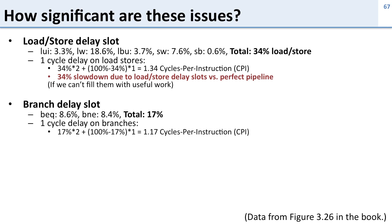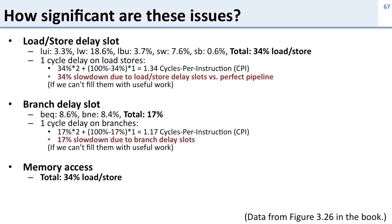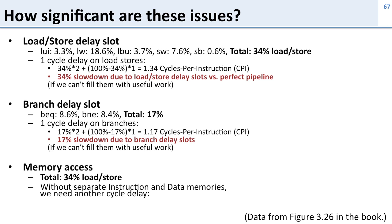On average we're going to spend 1.17 cycles for every instruction due to these branch delay slots — a 17% slowdown. And again, this is true only if we can't fill them with useful work. Now let's look at memory accesses. We have a total of 34% load/stores, and if we don't have separate instruction and data memories we need another cycle of delay — a 34% additional slowdown that we can't really avoid. So we're talking about 34% or 17% slowdowns due to these delay slots.